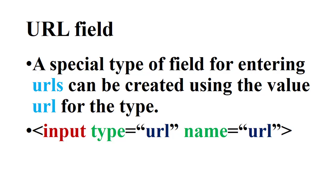The second input type is the URL field. A URL field is a special type of field for entering URLs, and can be created using the value 'URL' for the type attribute. The syntax is: input type equals 'URL', name equals 'URL'.